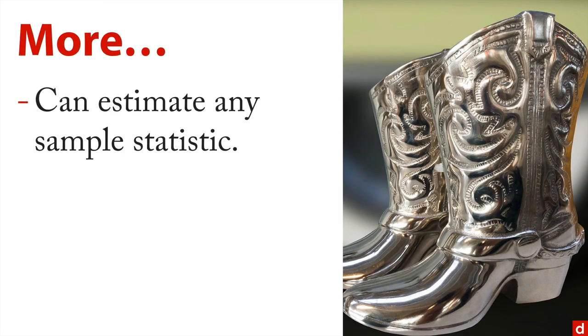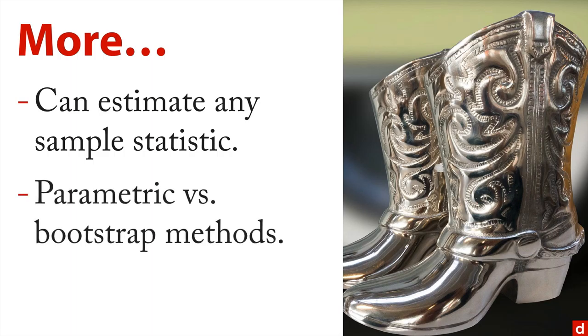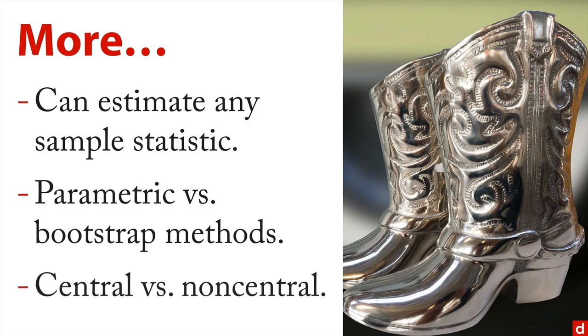I like to think of this as an ability to estimate any sample statistic. There are a few different versions. We have parametric versions of estimation and bootstrap versions. That's why I got the boots here. That's where you randomly sample from the data in an effort to get an idea of the variability. You can also have what are called central versus non-central confidence intervals, but we're not going to deal with those.